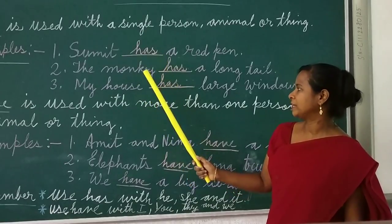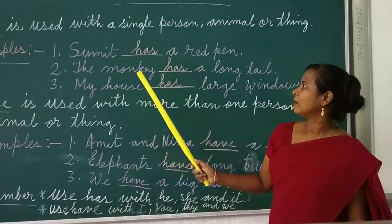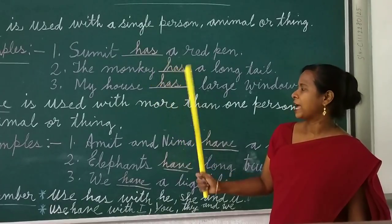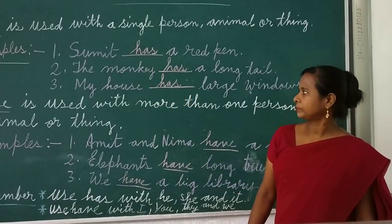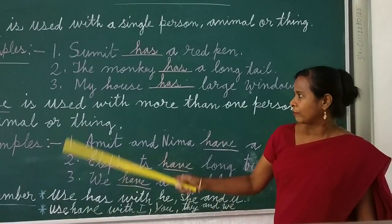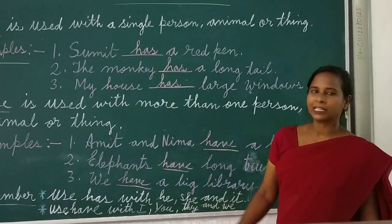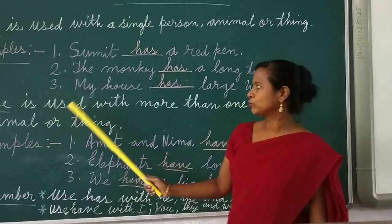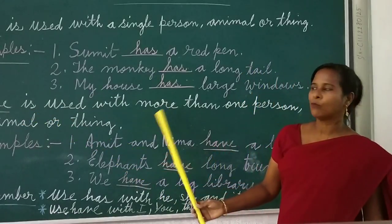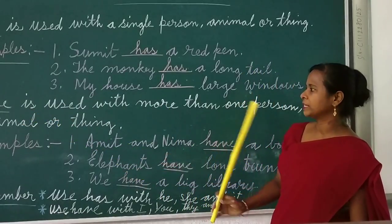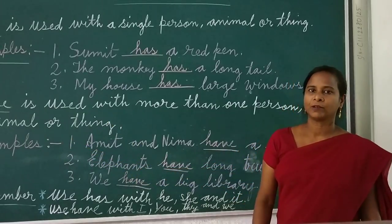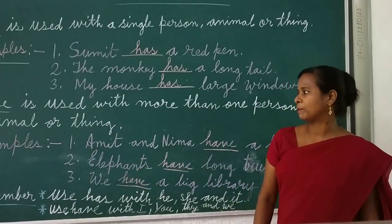After a single person, you have to use 'has'. When to use 'have'? 'Have' is used with more than one person, animal, or thing — more than one person.